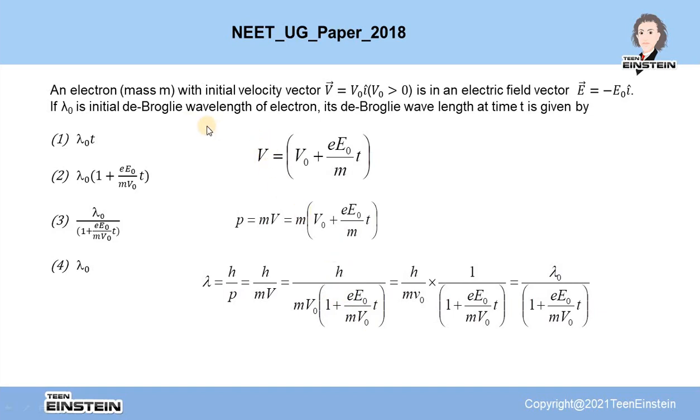Again, initially, the de Broglie wavelength is given as lambda 0. So the term h by mv0 can be written as lambda 0. And this term will keep as it is. So I get de Broglie's wavelength after time t to be lambda 0 divided by 1 plus small e into capital E0 divided by mv0 into t.